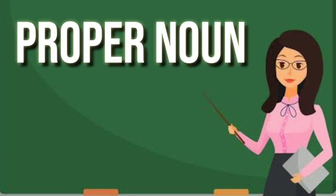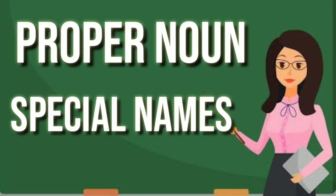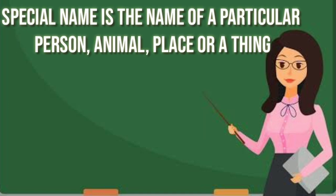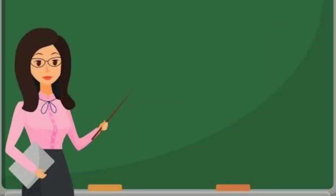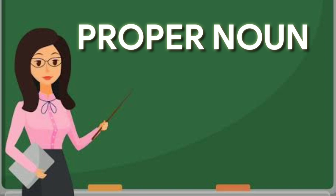Now we will learn proper noun or special name. What is a special name? A special name is the name of a particular person, animal, place or thing. Now we will see some proper nouns.